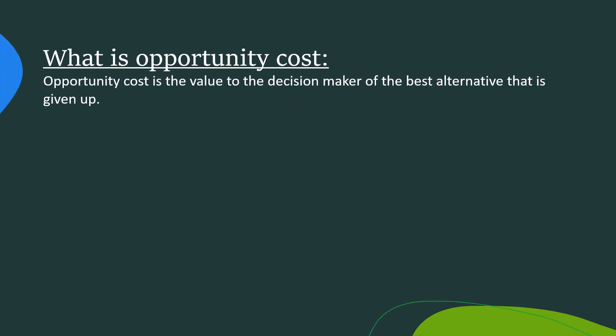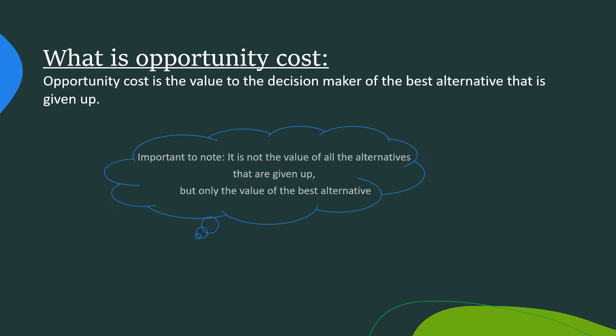So what is opportunity cost? The most common way it is described is that opportunity cost is the value to the decision maker of the best alternative that is given up. It is important to note that it is not the value of all the alternatives given up, but only the value of the best alternative.